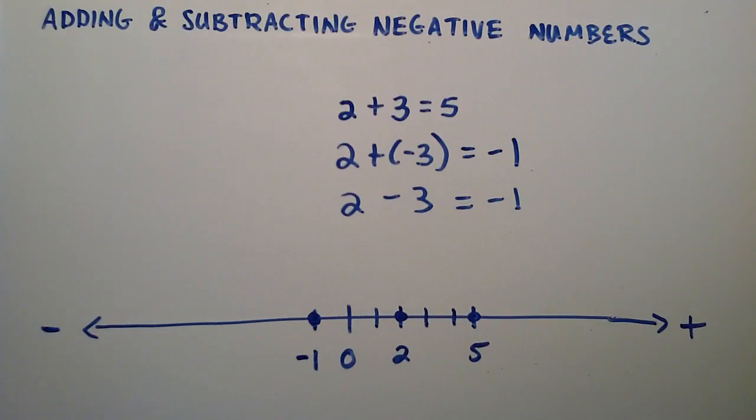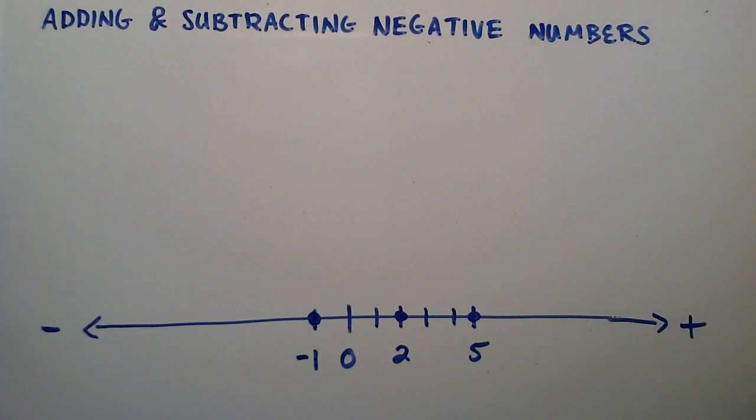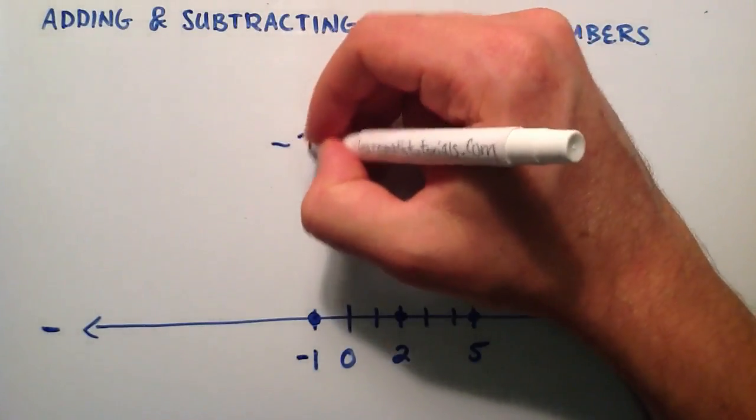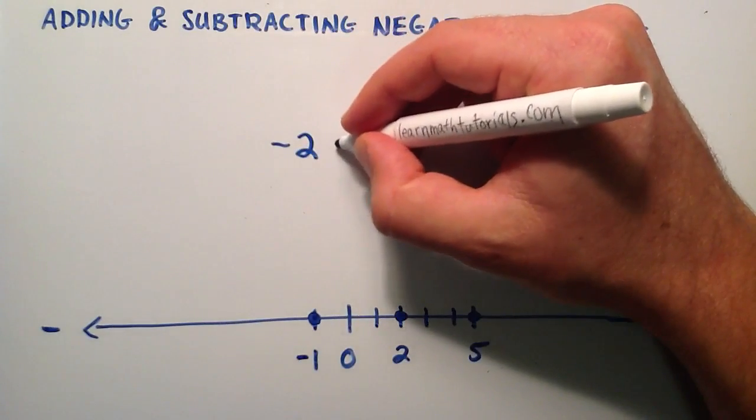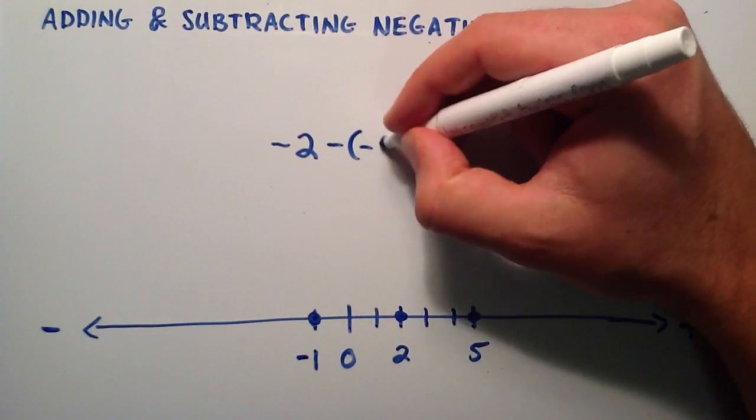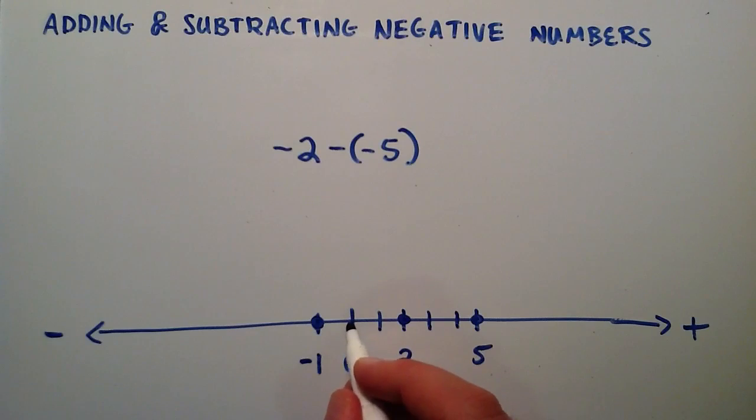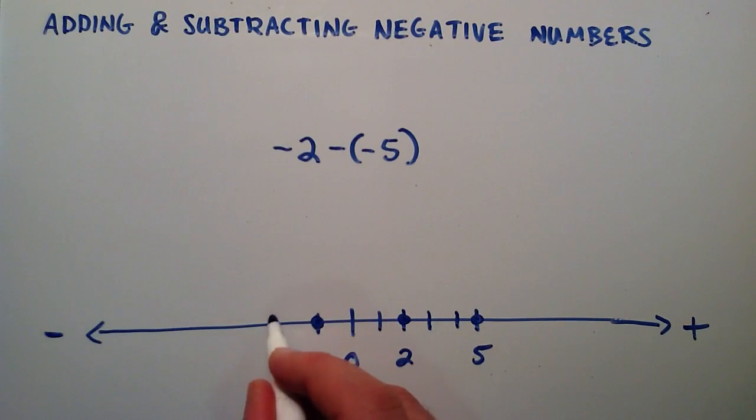So let's go ahead and do another example here. Let's say that we have negative 2, and we want to subtract a negative 5. So you go over here, starting at 0, negative 1, negative 2 units. So we went 2 in the negative direction. So this would be the number negative 2.